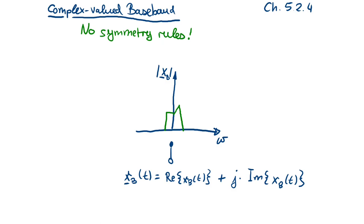Before we look at how we can solve the mirror frequency problem in our Zero-IF receiver structure, we will extend our view on signals. So far we have mostly considered real-valued signals, but now we are going to extend our view to complex-valued signals too. Signals need to be real-valued when they must be represented physically by some physically existing signal, like a voltage signal or a current signal. So that a physical signal can exist, it must be real-valued.